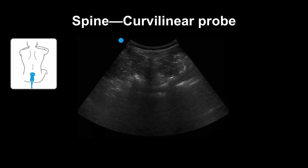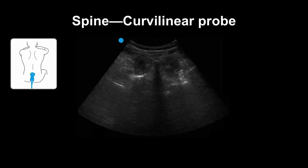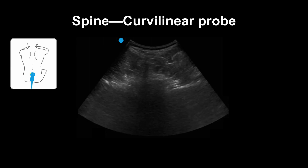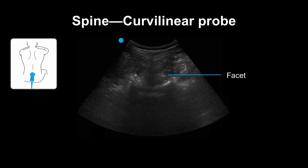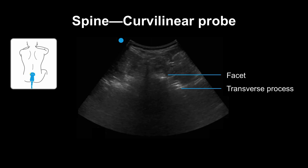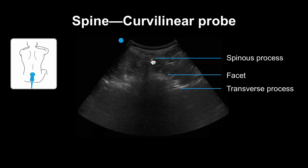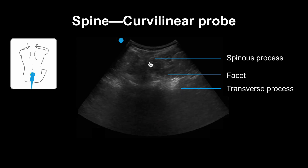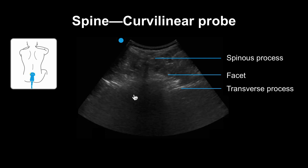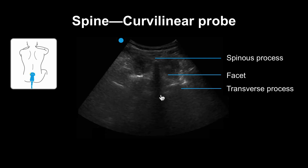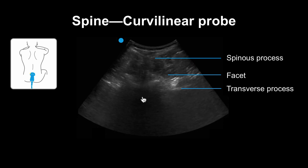Sometimes we use the low frequency curvilinear probe to get these views. On this clip, the operator is sliding the probe in the transverse plane. Here you can see the facets, the transverse process, as well as the spinous process. The spinous process here may appear to you like a steeple. Here you can see the vertebral body with its hyperechoic top and corresponding shadow downward.